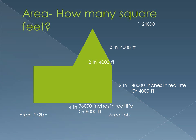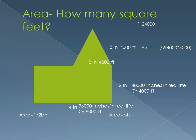Now we've got to find the area of the triangle. We're going to do one half base times height. Our base is 4,000 feet and our height is 4,000 feet. So 4,000 times 4,000 is 16 million — six zeros and 4 times 4 is 16. Then times one half gives us 8 million square feet.